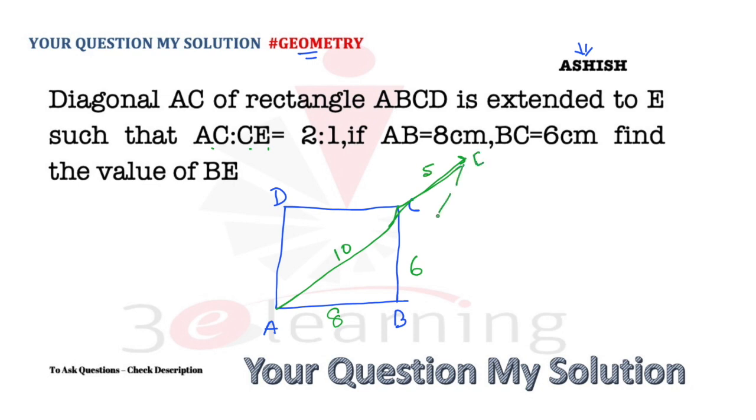We need to find the value of BE. One method is to use cosine. If you use cos theta, this will be very easy. In triangle ABC, cos theta is base divided by hypotenuse, which is 4:5. I will use cos theta in triangle ABE.